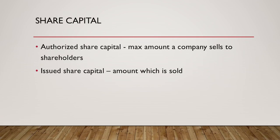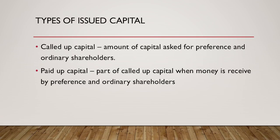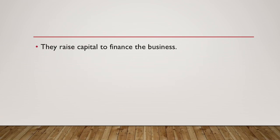Share capital: authorized share capital is the maximum amount a company can sell to the shareholders. Issued share capital is the amount which is sold to the shareholders. Types of issued capital: called-up capital is the amount of capital asked for from the preference and ordinary shareholders. Paid-up capital is the part of the called-up capital when the money is actually received by the preference and ordinary shareholders, and the business has raised capital to finance the business.